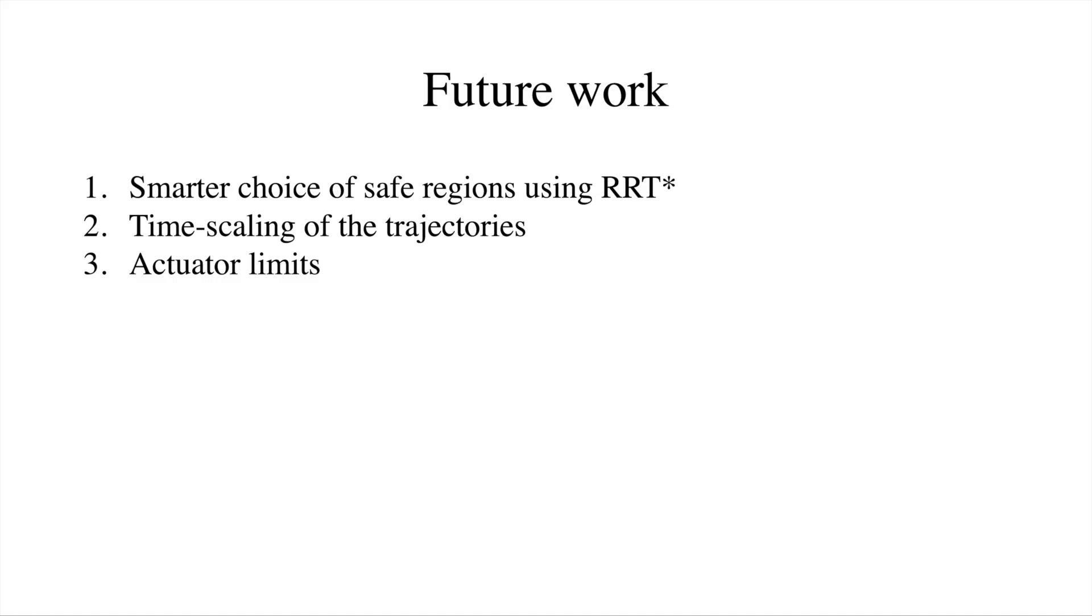In the future, I would like to look into different choices of where to generate the convex safe regions. This could be done, for example, by using waypoints from algorithms like RRT star. I would like to look more into this, as the algorithm is currently very sensitive to the exact placement of the obstacles compared to the number of convex regions.